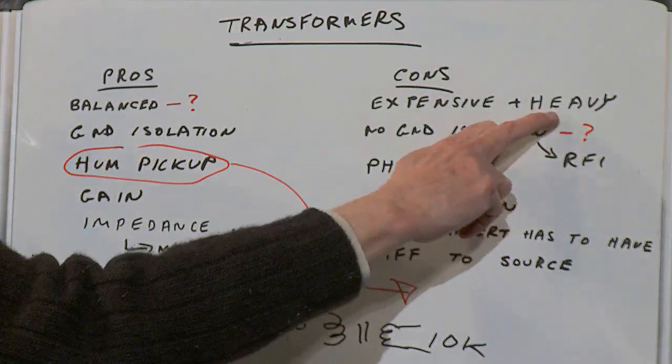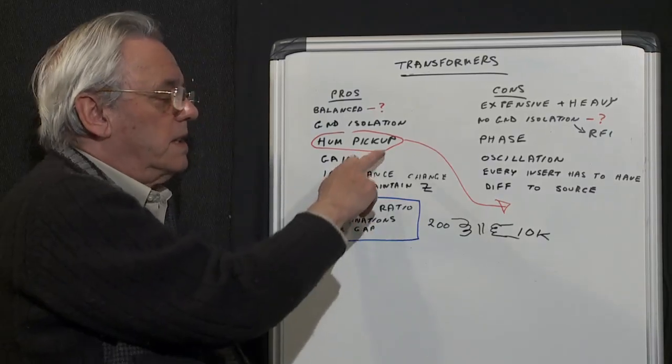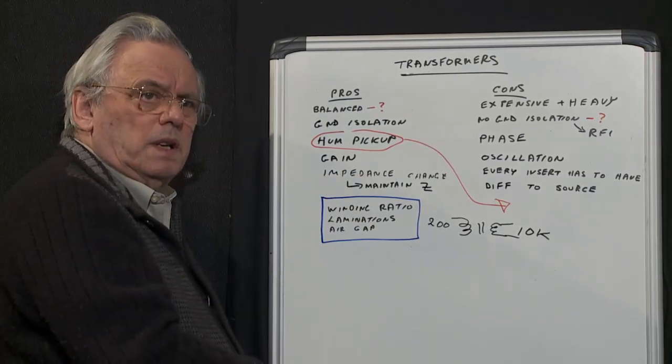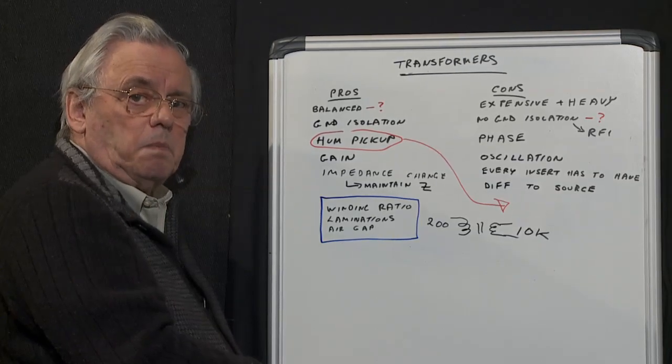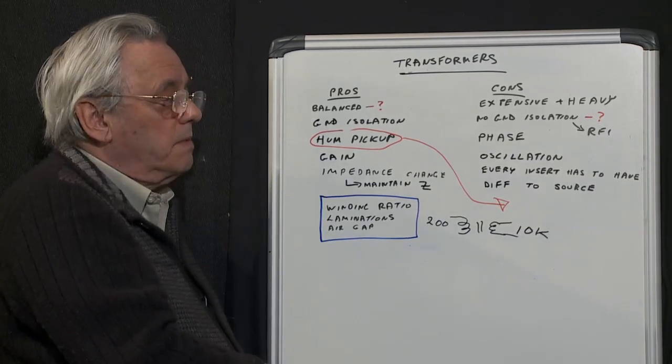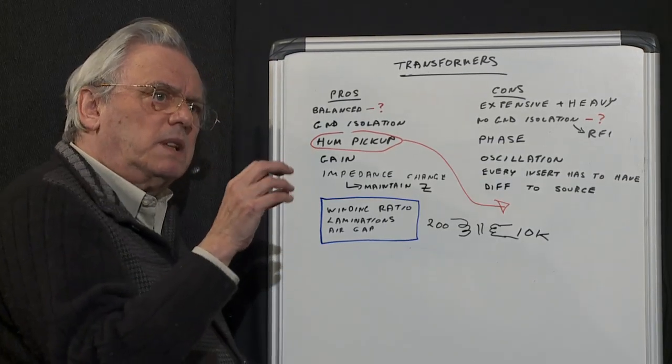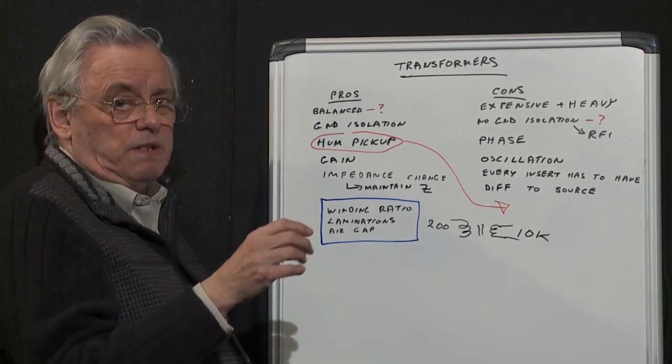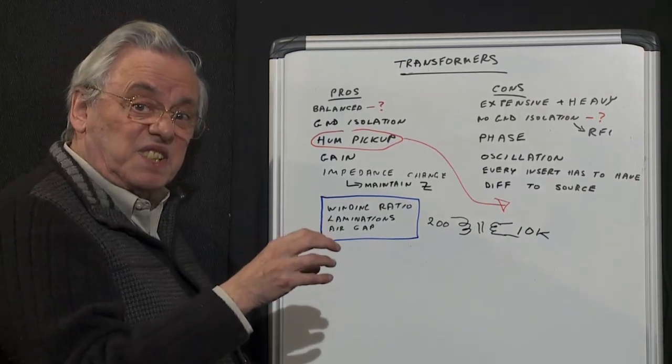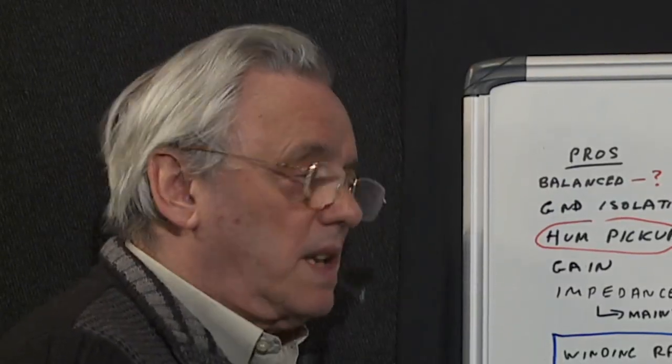It's also a lot of additional weight because transformers are heavy. Coming down to hum pickup, they're very susceptible to picking up hum, mainly mains hum, so you have to mount the transformer in a mu metal case. That's a special kind of metal that isolates hum from your transformer—very expensive. Just the case is expensive and also the case adds more weight.